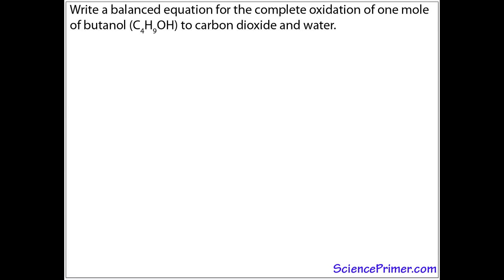This is a demonstration of how to balance a chemical equation. The equation we're going to balance in this example is the complete oxidation of butanol with oxygen to produce carbon dioxide and water. We'll start by writing the equation, which is C4H9OH plus O2 combined to form CO2 and water.